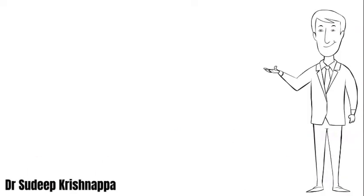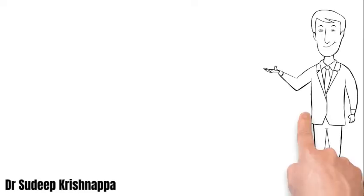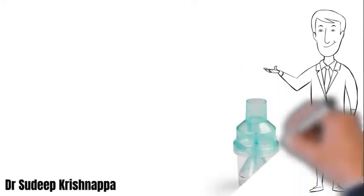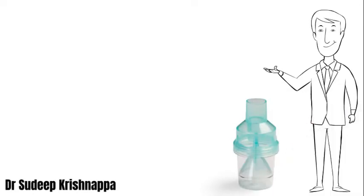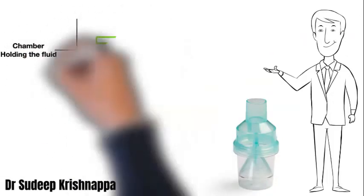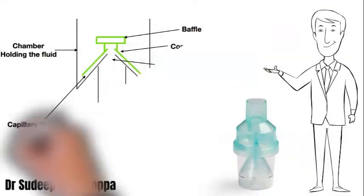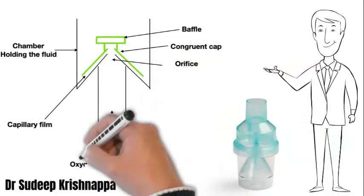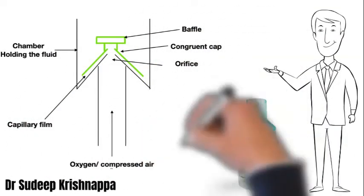As mentioned earlier, these Venturi devices come in various shapes depending on the manufacturer's specifications. Here we have chosen one such device — only the nebulizing chamber is highlighted and the rest of the components are essentially the same. This line diagram represents the internal mechanism of the nebulizing chamber.